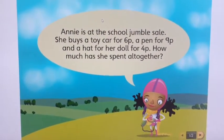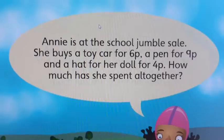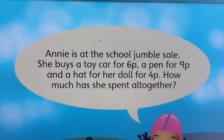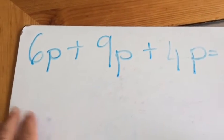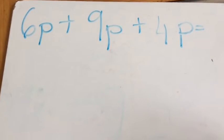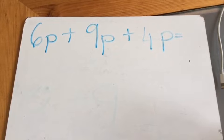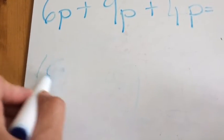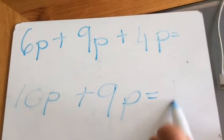Now we're going to use our known number facts in cheeky, sneaky ways to solve some word problems. Have a read at this one. Pause the screen. On some square paper, write down the sum that you need to do to work out the answer. Now underneath, I want you to show me how you could solve that using a known number fact. How can you show me what went on in your brain? Maybe you noticed you've got a number bond to 10 again — 6 and 4 is 10p. And you know what the answer is: easy peasy, 19p.